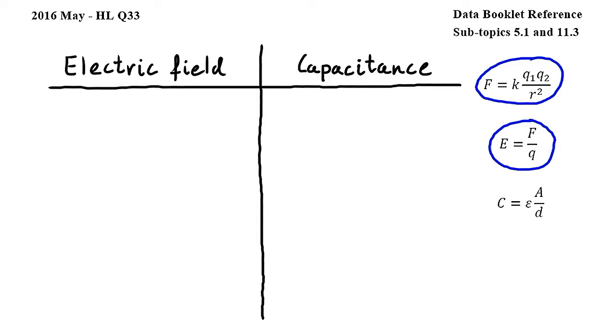Since in the first equation we see that the force is inversely proportional to the square of the distance and in the second equation we see that E is directly proportional to F, we can conclude that E, the electric field, is inversely proportional to the square of the distance.